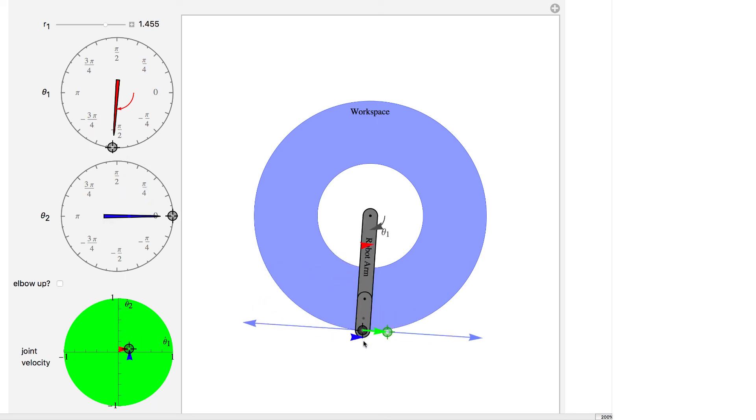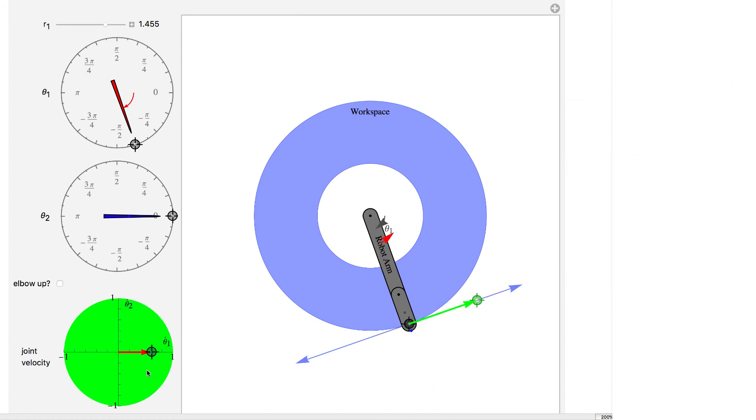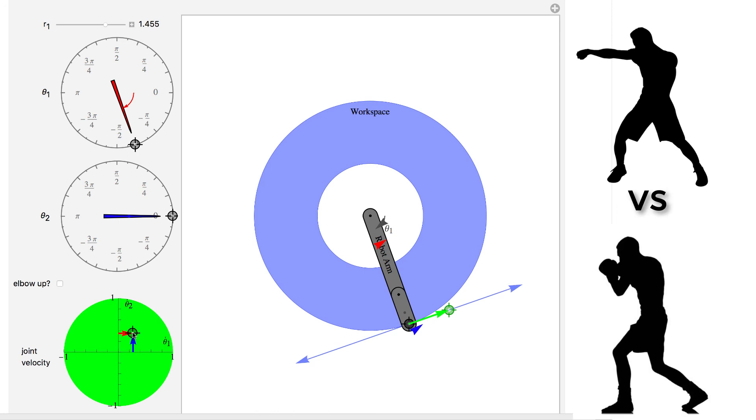Now when I get into a singular configuration, this ellipse that I have goes into a degenerate case. So it flattens into a line. Now the only velocities I can do are along this line. And so any input that you put in here is only going to generate instantaneous velocities that are straight out in that direction. You can think about that. Take your arm and then hold it straight out. And now if you move your shoulder and you move your elbow, you're only moving your thumb up and down. You can't bring it in towards yourself instantaneously.